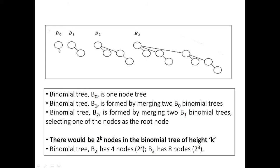Binomial tree v0 is a one node tree. Binomial tree v1 is formed by merging two b0 binomial trees. Binomial tree v2 is formed by merging two b1 binomial trees, selecting one node as the root node. There would be 2 power k nodes in the binomial tree of height k. For example, for b3 binomial tree, we require 8 nodes — 2 power 3 — to represent the binomial tree of height 3.